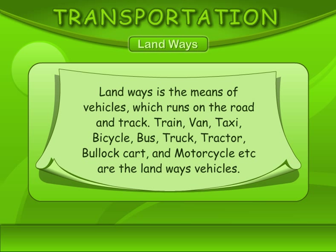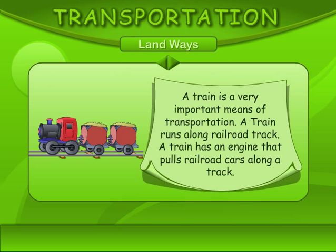A train is a very important means of transportation. A train runs along a railroad track. A train has an engine that pulls railroad cars along a track.